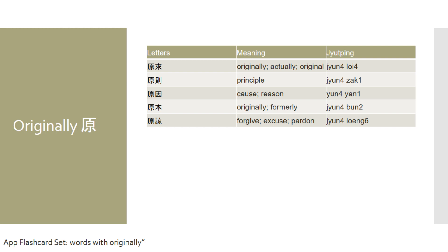The third Chinese character means originally. In Cantonese, it is pronounced 原 (yuen). If we want to say originally or actually in Cantonese, we say 原來 (yuen loi). Principal in Cantonese is 原正. The cause or reason in Cantonese is 原因 (yuen yan). Originally or formerly in Cantonese is 原本 (yuen bun). Excuse, pardon, or forgive in Cantonese is 原諒 (yuen leung).